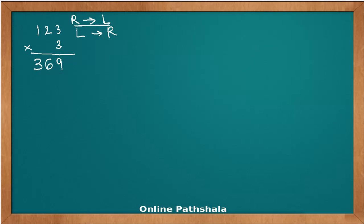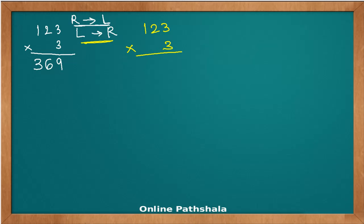Now what would I do if I have to do this from left to right, starting from the leftmost digit and moving toward the units digit? For 123 multiplied by 3, the key thing to keep in mind when changing direction is to place each digit in the same position from where you started. Three times one is three, three times two is six, three times three is nine — we get the same answer.